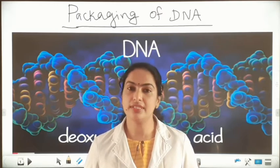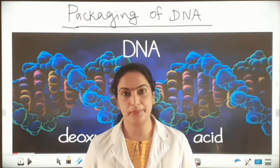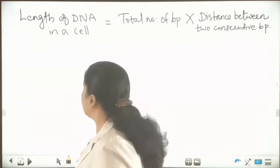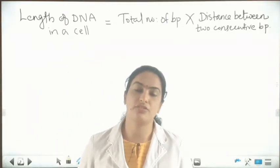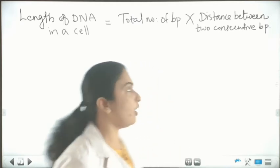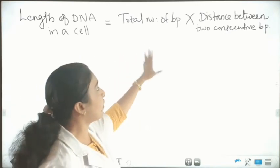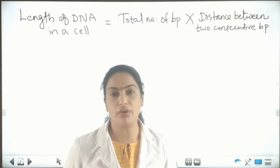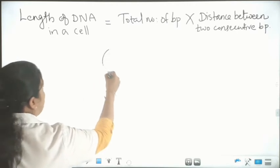So how this DNA is packed inside this nucleus, we can see. Before that, we have to see the length of the DNA in a cell. The formula which is used to measure the length of the DNA in a cell is: total number of base pairs into distance between two consecutive base pairs.